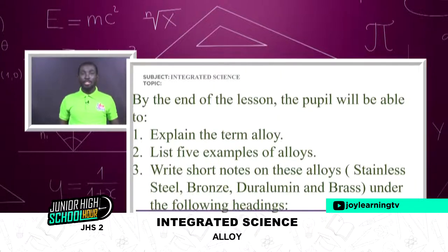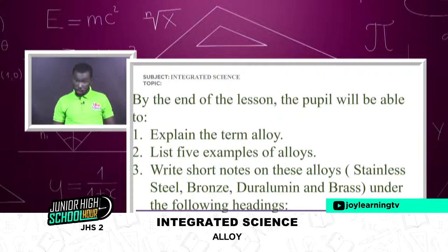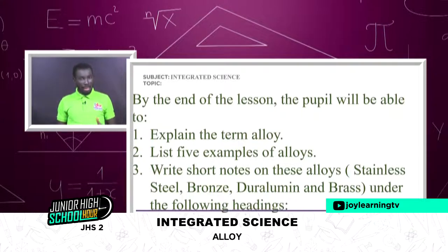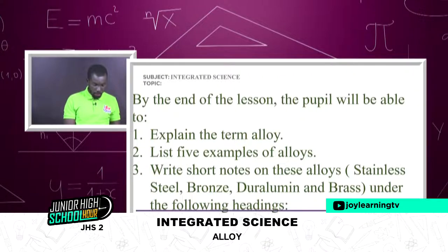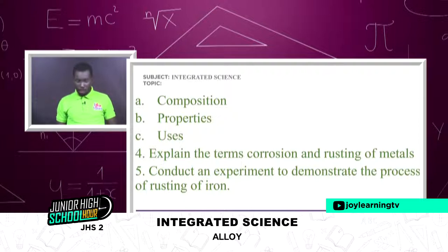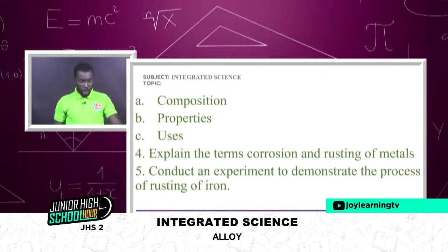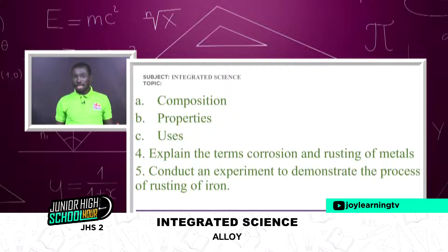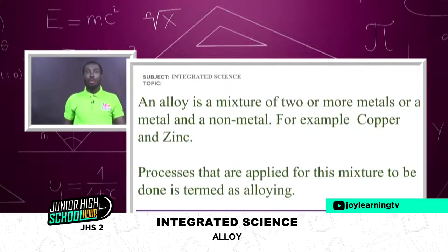By the end of today's lesson, we want to: explain the term alloy; list five examples of alloys; write short notes on stainless steel, bronze, duralumin, and brass — covering their composition, properties, and uses; explain the terms corrosion and rusting; and conduct an experiment to demonstrate the process of rusting of iron.